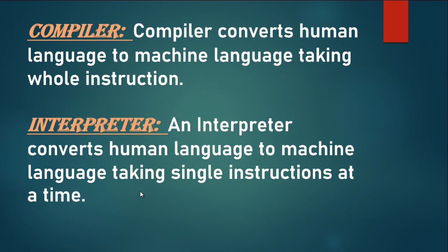Interpreter. An interpreter converts human language to machine language taking single instructions at a time. That is the difference between a compiler and an interpreter — the compiler takes whole instructions, but the interpreter takes a single instruction at a time to convert human language to machine language.